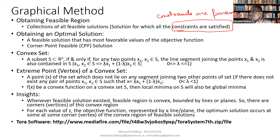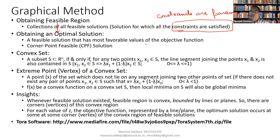We start by considering all the constraints, and accordingly we have the region known as the feasible region. From that feasible region, we move to the optimum solution. The optimum solution actually belongs to a subset of the feasible region — specifically, the region most favorable in terms of the objective function. Here one important thing is the corner point feasible solution, as we discussed in the earlier case.